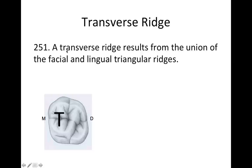Transverse ridge. A transverse ridge results from the union of a facial and lingual triangular ridge. Here we've got a picture of a maxillary first molar — I put a T on these cusps to remind myself there's a transverse ridge. We see the buccal and lingual triangular ridges joining together to make a transverse ridge.